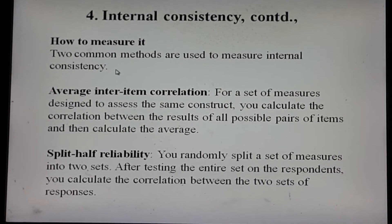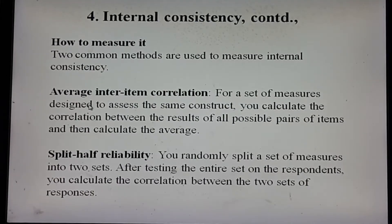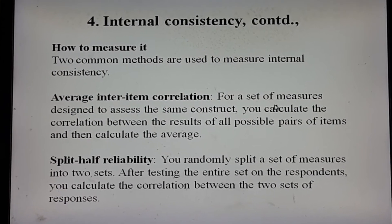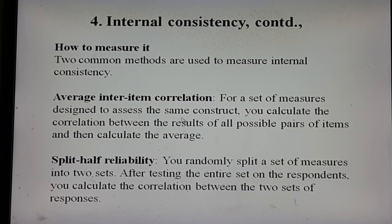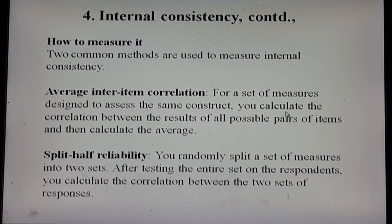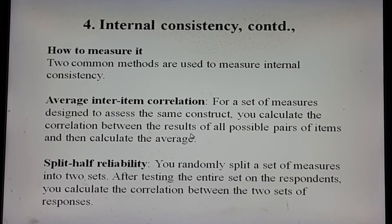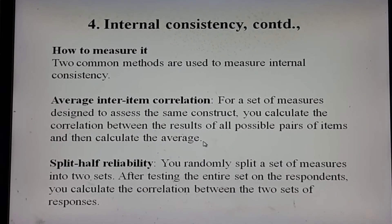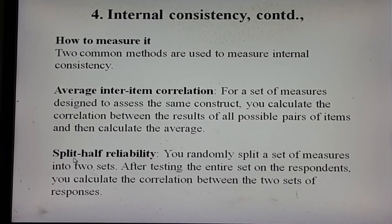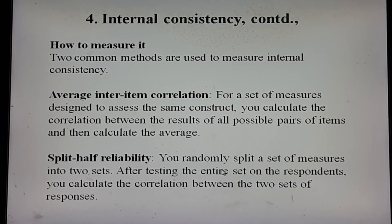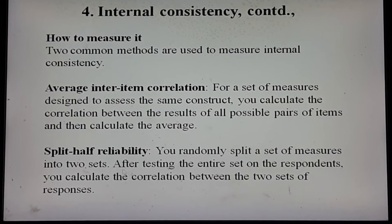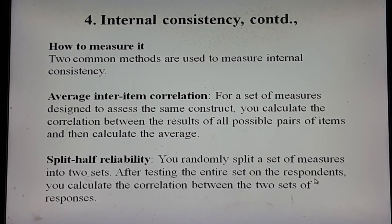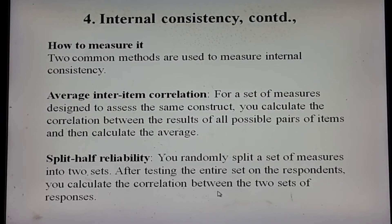The common methods used to measure internal consistency include average inter-item correlation: for a set of measures designed to assess the same construct, you calculate the correlation between all possible pairs of items and then calculate the average. Another method is split-half reliability: you randomly split a set of measures into two sets, and after testing the entire set on the respondents, you calculate the correlation between the two sets of responses.